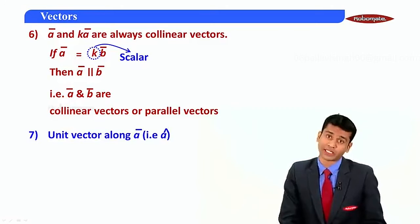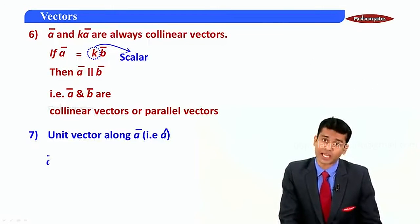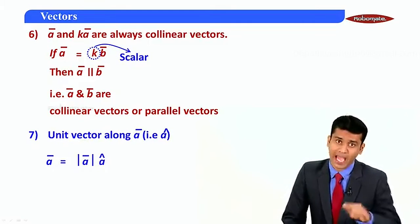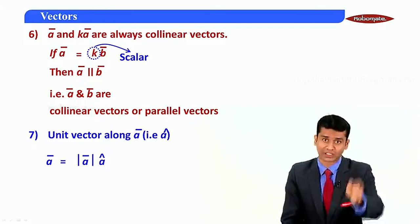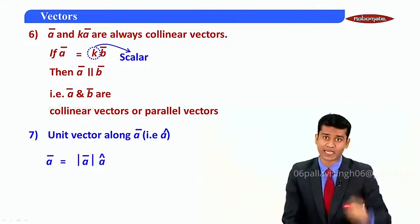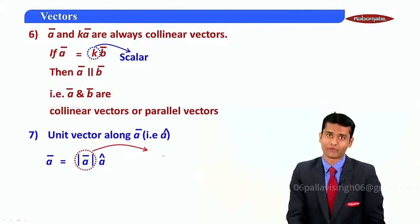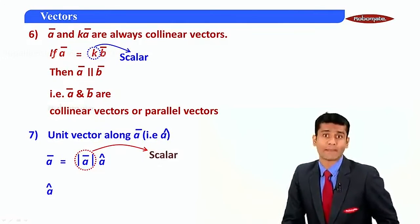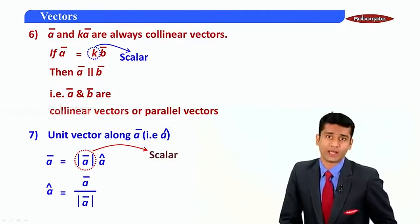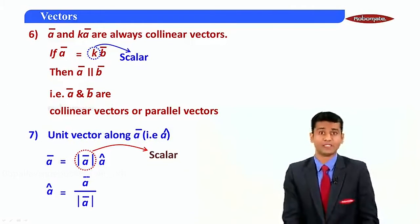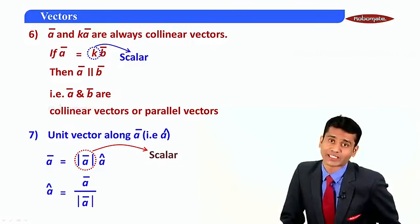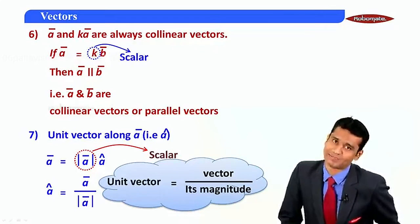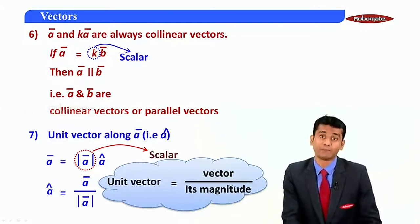Property seven: the unit vector a-cap. The vector a-bar is denoted as the magnitude of a-bar multiplied by a-cap — the magnitude times the direction gives a-bar. Since the magnitude of a-bar is a scalar, we get a-cap equals a-bar divided by the magnitude of a-bar. So the formula for a unit vector is: unit vector equals the vector divided by its magnitude.